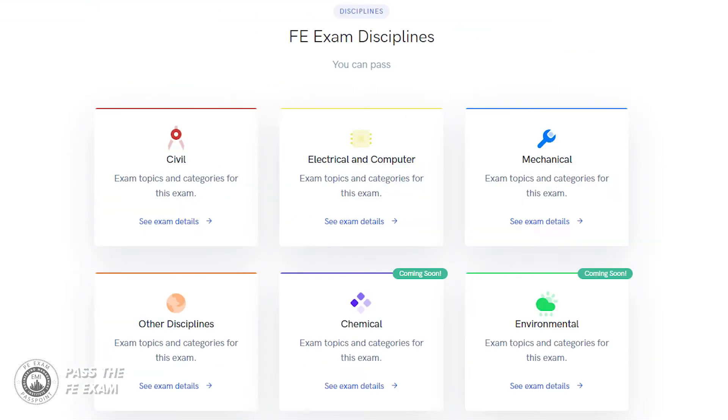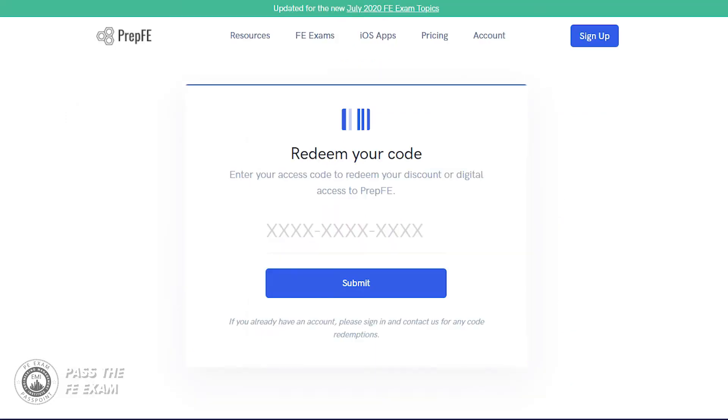PrepFE is an app that gives you access to countless sample FE problems to bolster your self-study efforts. You can visit PrepFE.com/redeem and use the discount code in the description of this video to receive 10% off and get some great FE practice problems.